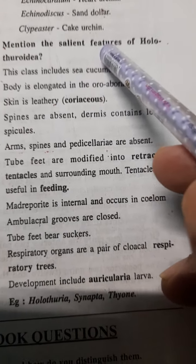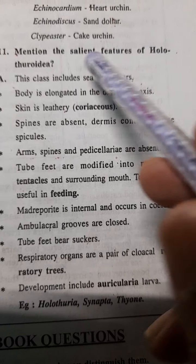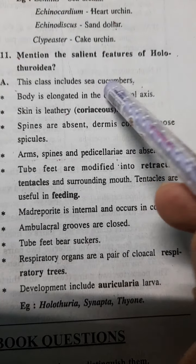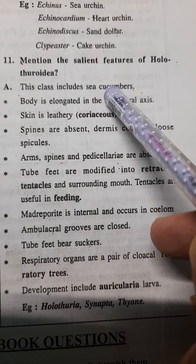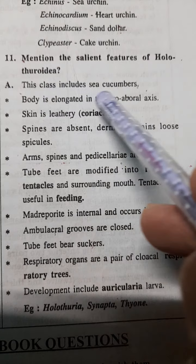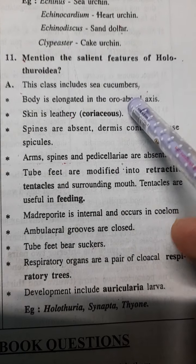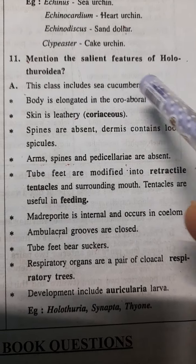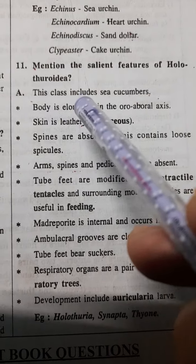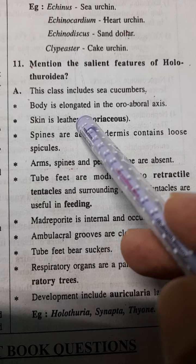Now let us mention the salient features of Holothuridia again. This class includes sea cucumbers. The body is elongated — in which axis? The oro-aboral axis. How is the skin? The skin is leathery.